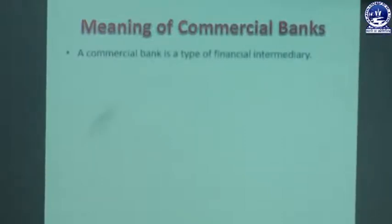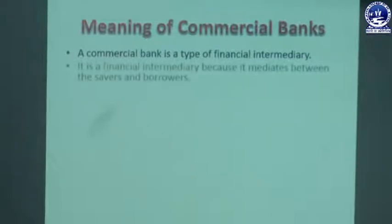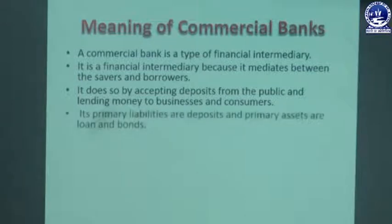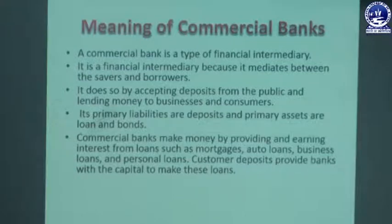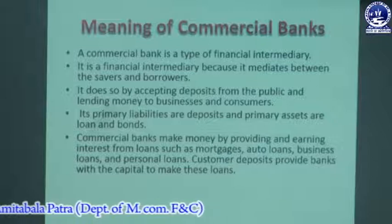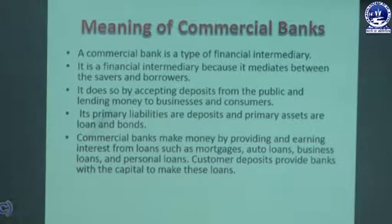A commercial bank is a type of financial intermediary. It intermediates between savers and borrowers by accepting deposits from the public and lending money to businesses and consumers. Its primary liabilities are deposits and its primary assets are loans and bonds. Commercial banks make money by earning interest from loans such as mortgages, auto loans, business loans, and personal loans. Customer deposits provide banks with the capital to make these loans.